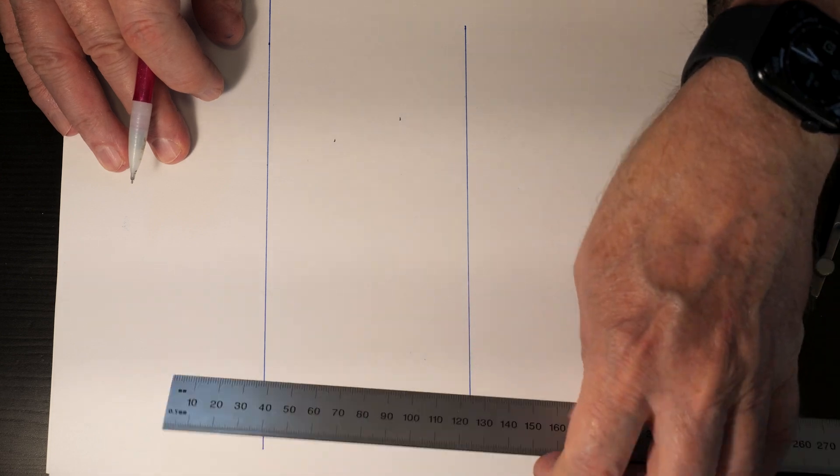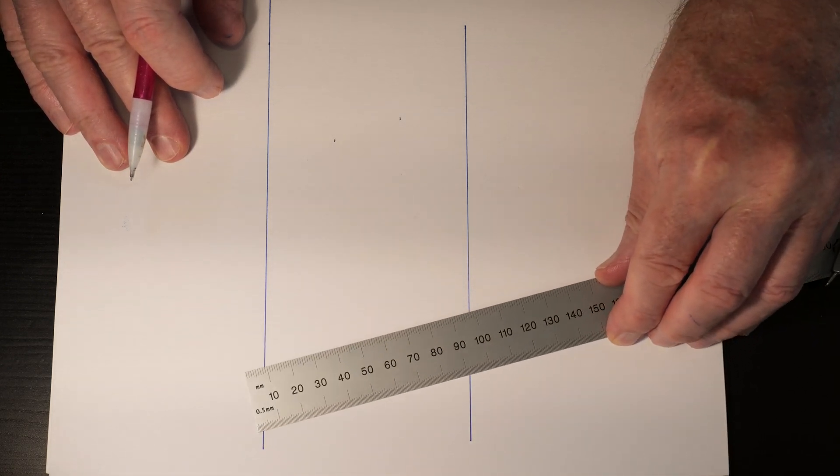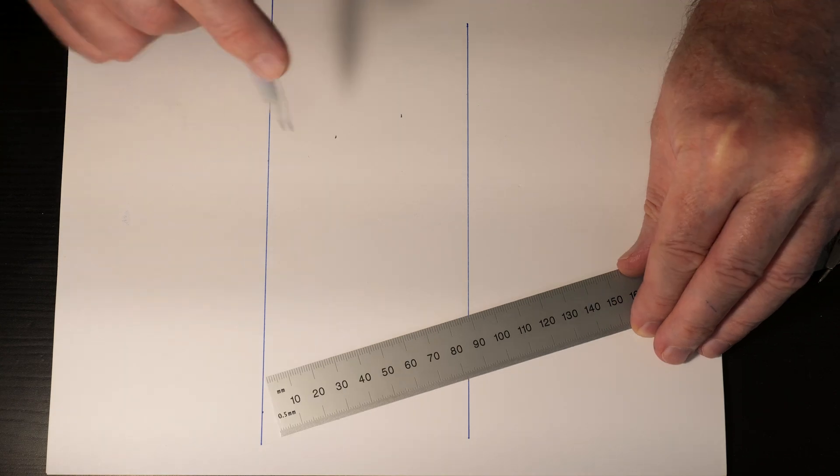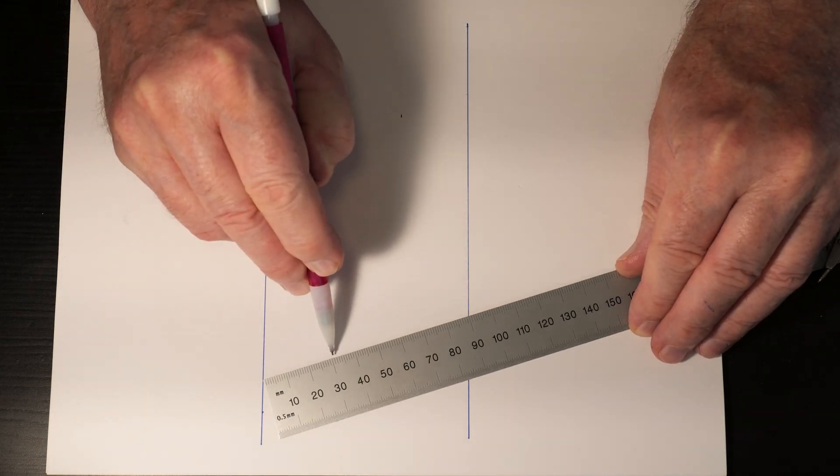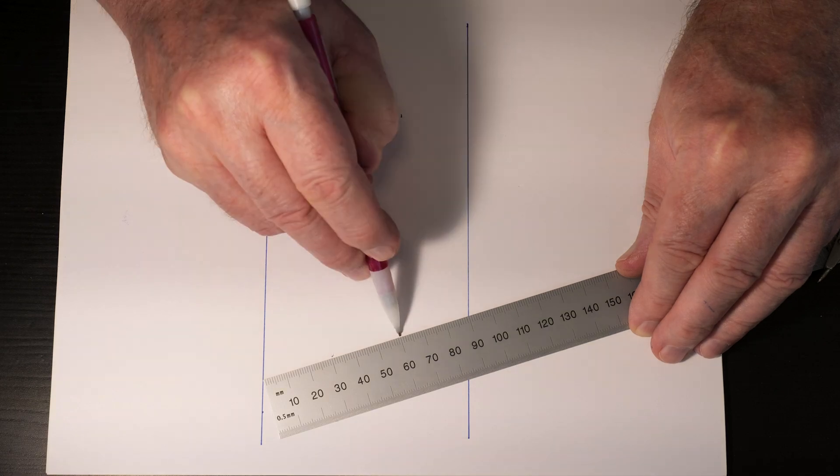Then you come up to the opposite end of the workpiece and do the same thing. Line my 90 up on one edge and my zero point with the other and I'm just going to make a mark at 30 and 60.